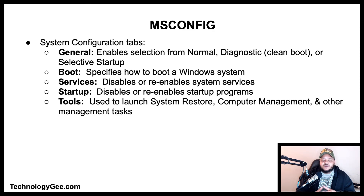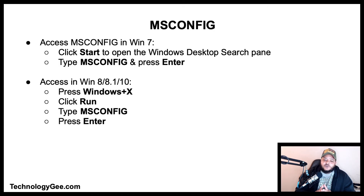The Tools tab in MS Config is used to launch System Restore, Computer Management, and other management tasks. To access MS Config in Windows 7, click Start, type msconfig, and press Enter. In Windows 8, 8.1, and 10, press Windows key + X, click Run, type msconfig, and press Enter.